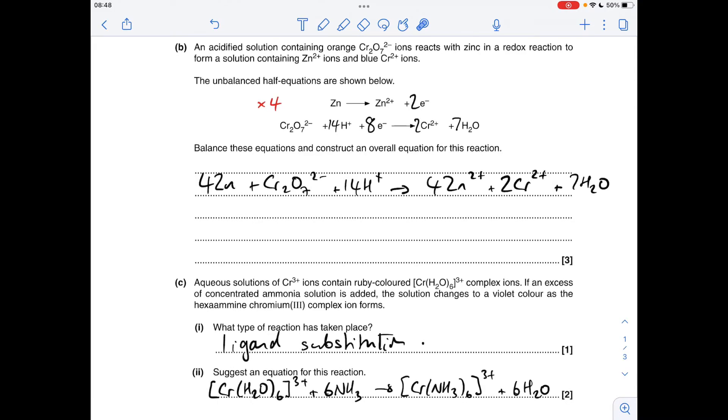So in terms of the equation, we get this here, so I'll just quickly explain that. All six water ligands have been replaced by six ammonia ligands. We know the charge is still 3 plus from the Roman III there.